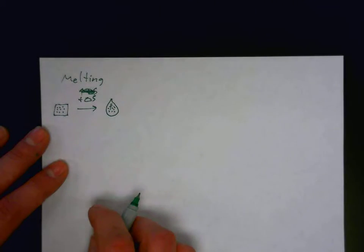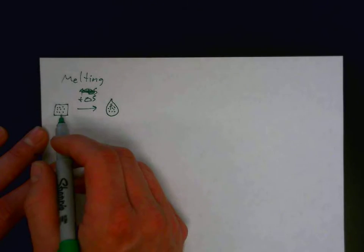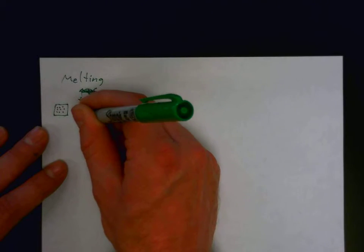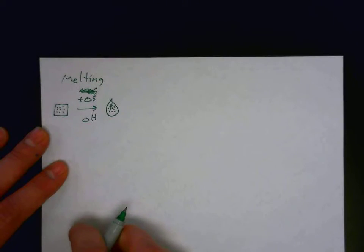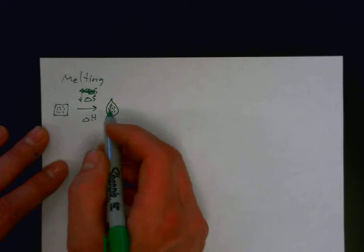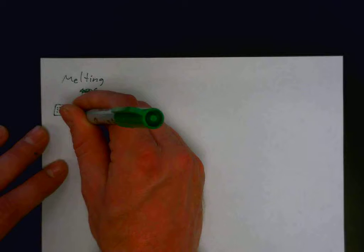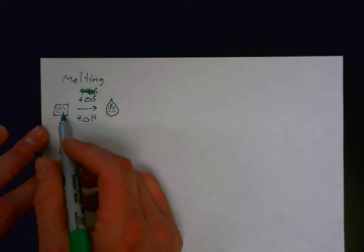Now, as we go from the solid to a liquid state, is the enthalpy, delta H, would that be increasing or decreasing? So, delta H would be also positive. This is an endothermic process. We have to add heat in order to melt ice.